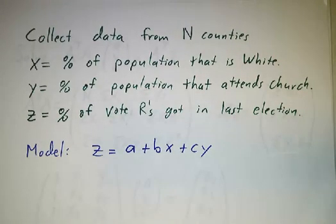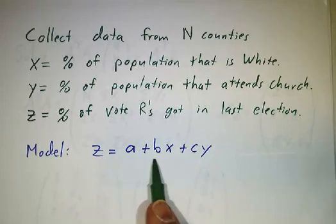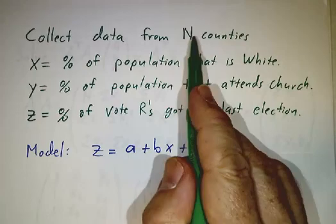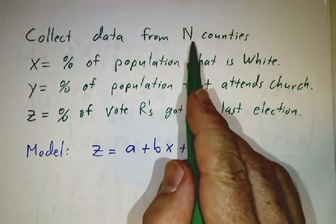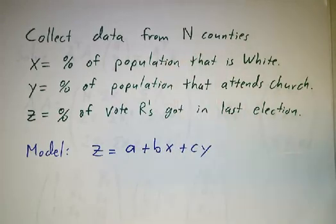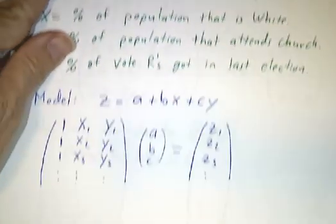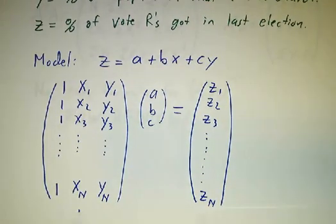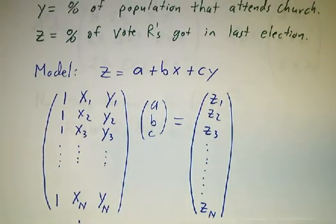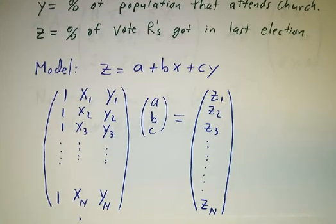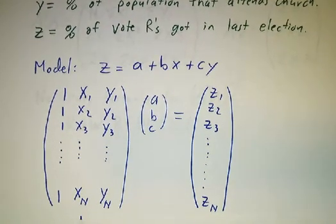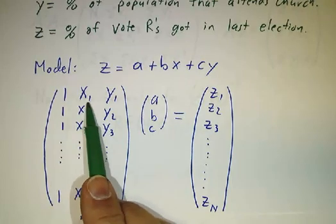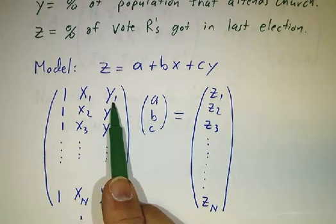What we're really saying is we want z to be a plus bx plus cy. So if you collect data for several thousand counties in this country, you're going to get data, and each data point is going to be a triple: x1, y1, z1 and x2, y2, z2. We're saying that each z should be a plus b times that x plus c times that y.